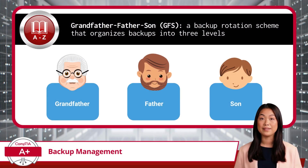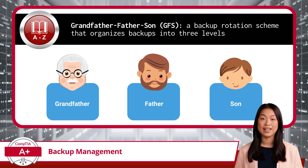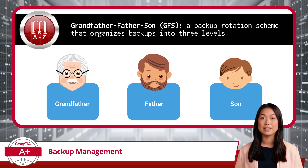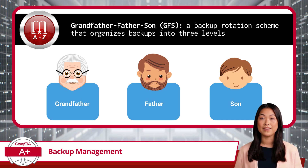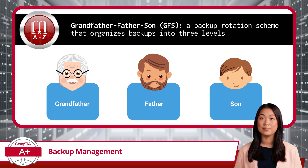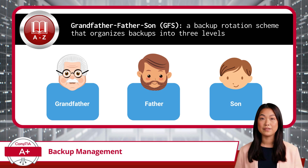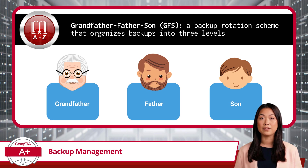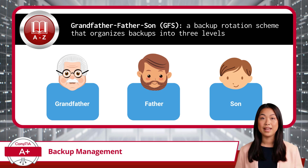After deciding where to store your backups, the next step is organizing those backups in a way that balances accessibility, redundancy, and storage management. This is where GFS, or the grandfather-father-son backup rotation, comes into play. GFS is a structured backup rotation scheme that organizes backups into three levels labeled grandfather, father, and son. It works in tandem with full, differential, and incremental backups, providing a framework for when backups are created and for how long they are retained. In this hierarchy, son backups are created most frequently and capture changes from the most recent activity. These backups are replaced regularly to keep storage requirements manageable. Father backups are created less frequently and provide a broader snapshot of your data, retaining changes over a longer period. Finally, grandfather backups are created the least frequently and preserved for the longest duration, acting as an archive of your data over time.